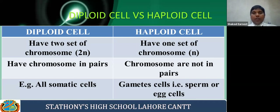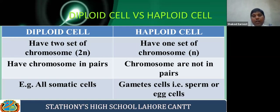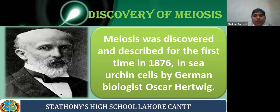We learned the differentiation between diploid and haploid cells. Diploid cells have two sets of chromosomes while haploid cells have one set. In diploid cells, chromosomes occur in pairs while they are not in pairs in haploid cells. An example of diploid cells is all somatic cells, and examples of haploid cells are all gamete cells like sperm, egg, or spore.